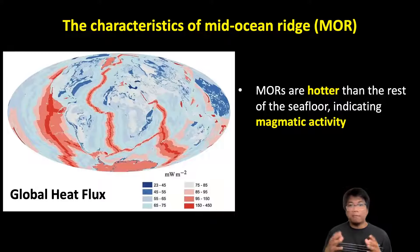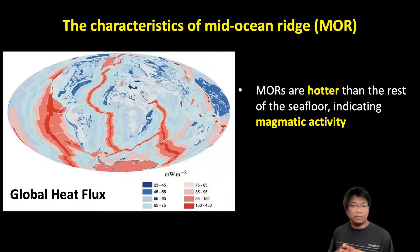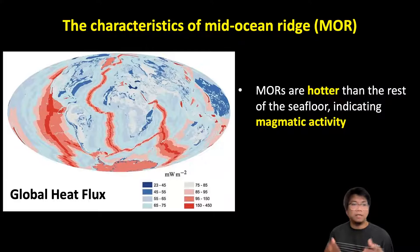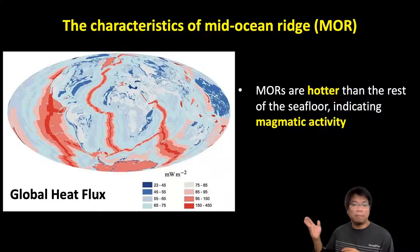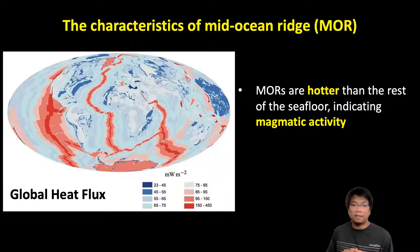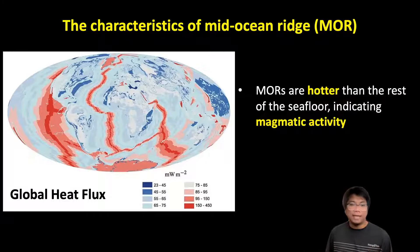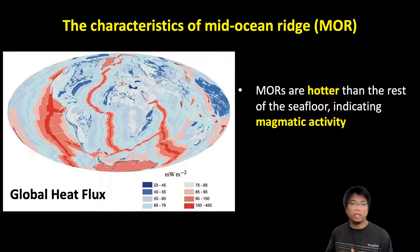The last characteristic of Mid-Ocean Ridges comes from the observation of global heat flux, as illustrated in this figure. This figure tells us where on Earth we would find anomalously hot or cold regions. We can see that all Mid-Ocean Ridges on this map have red indicators, meaning these ridges are typically hotter than the rest of the seafloor, indicating that there is magmatic or volcanic activity going on along these ridges.